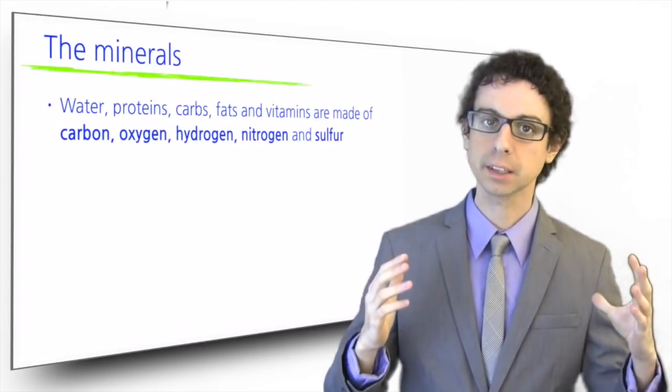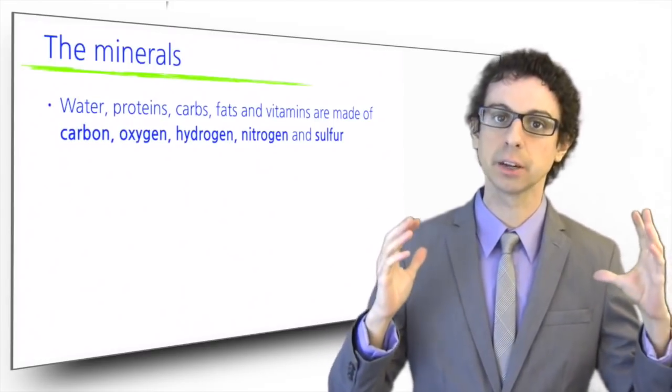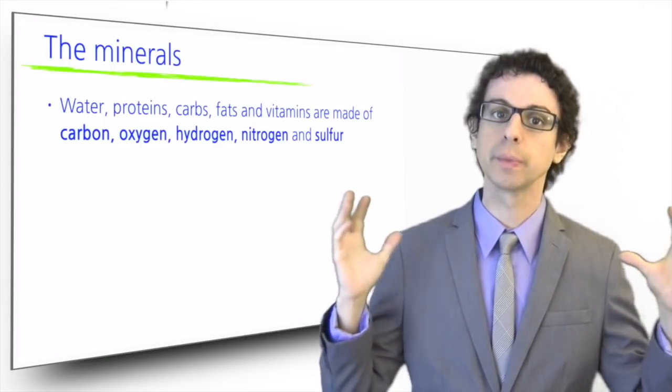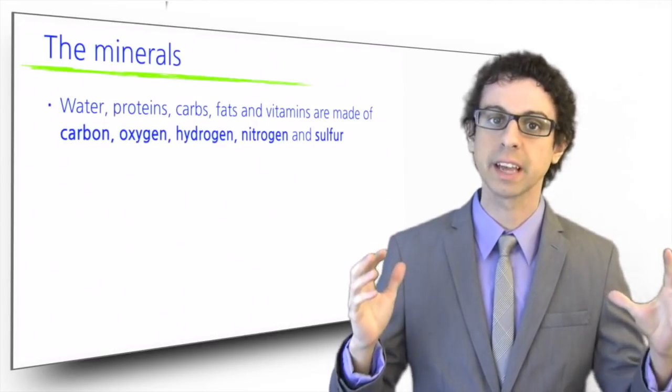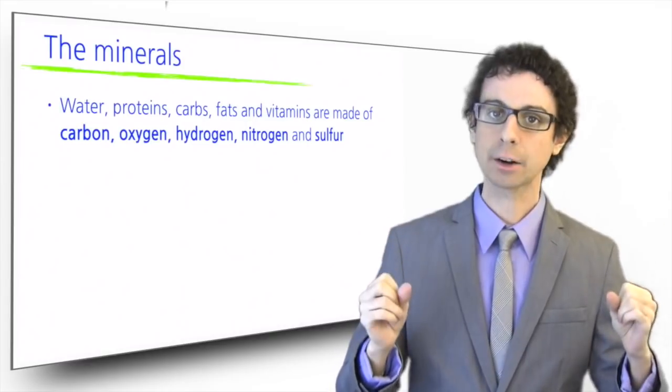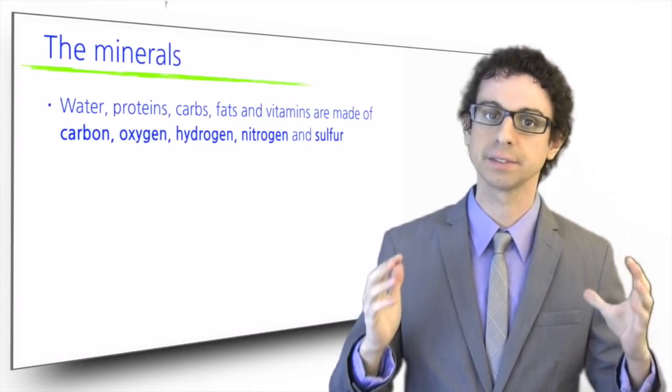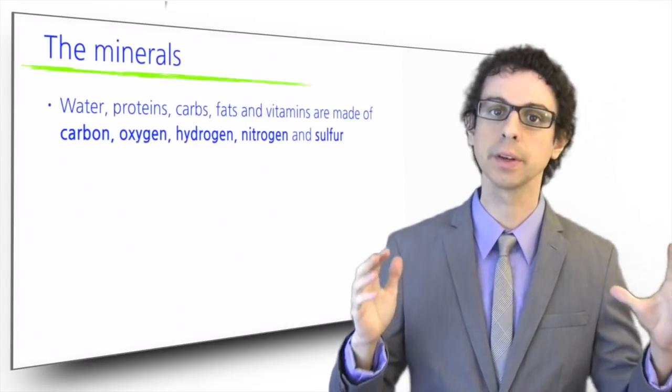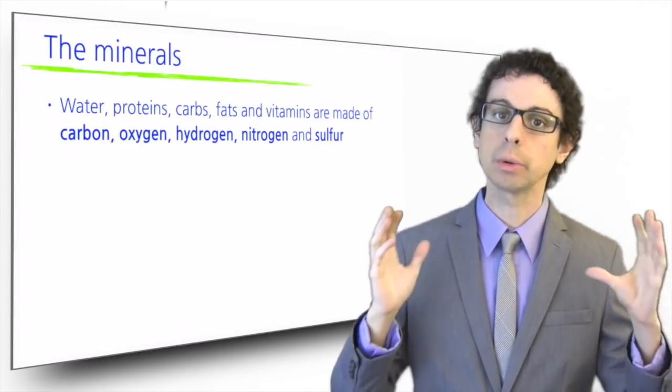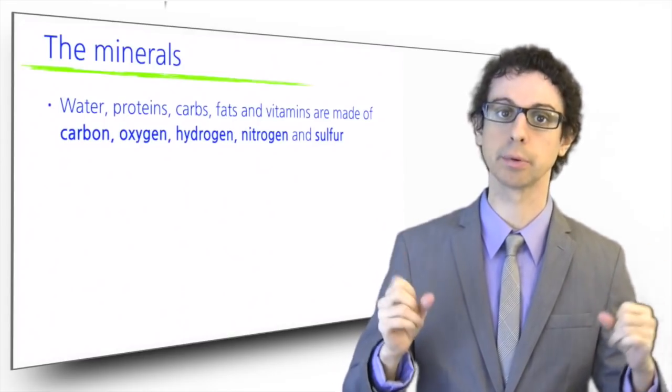Water, which is the most abundant molecule in our body, is made of hydrogen and oxygen. From the air we breathe, we only retain oxygen. The three macronutrients - proteins, carbs, and fats - are all made of carbon, hydrogen, and oxygen, with some nitrogen and sulfur in proteins.